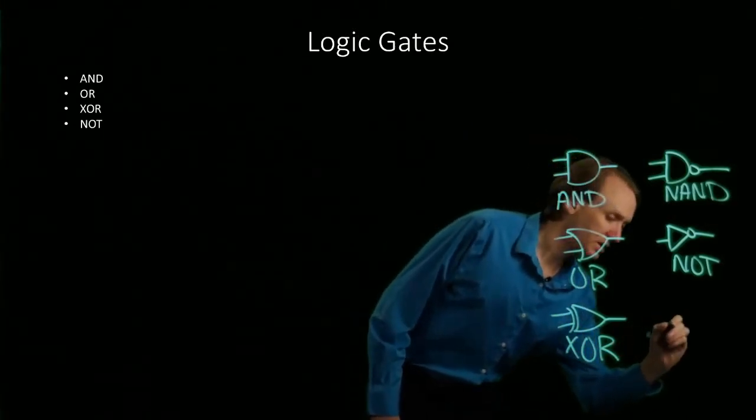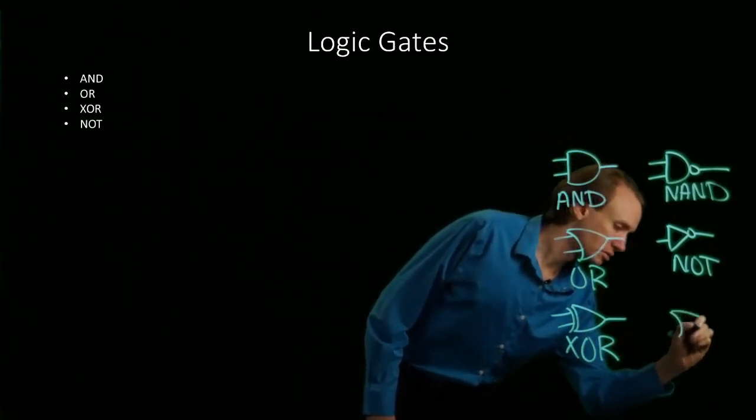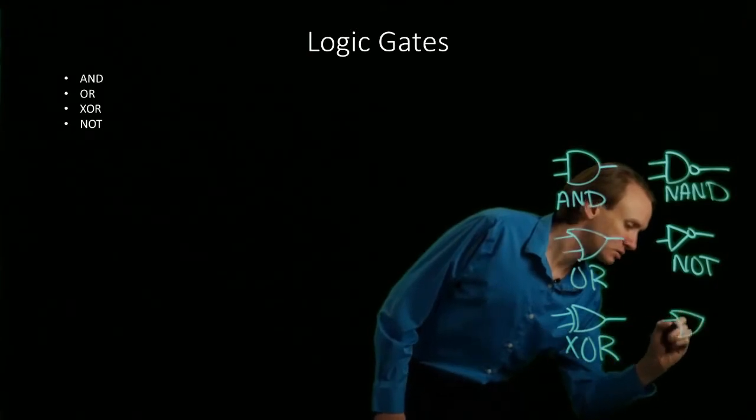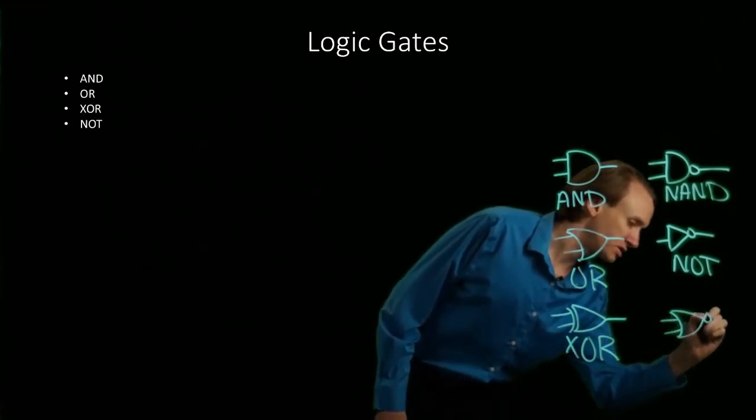If I wanted a NOR gate, I would start with an OR gate and add a circle at the end.